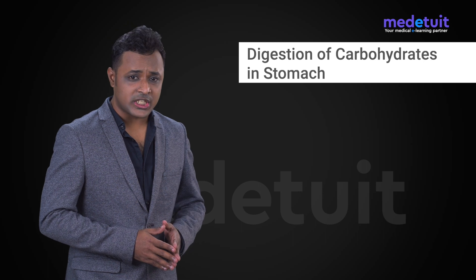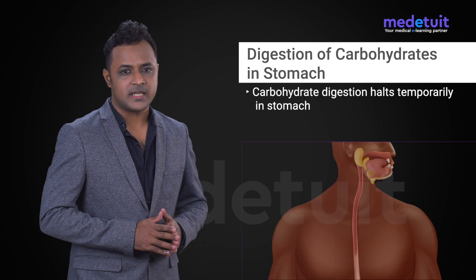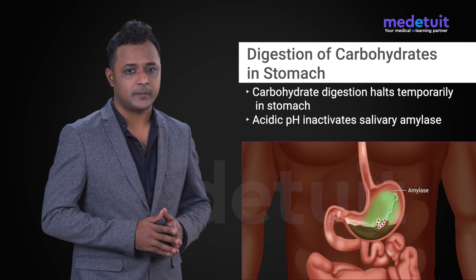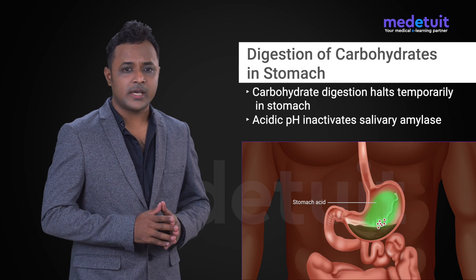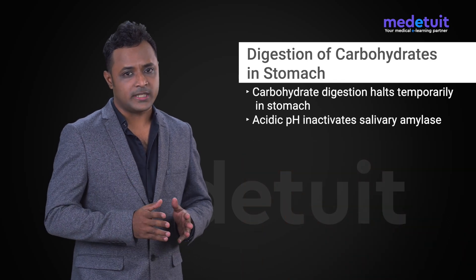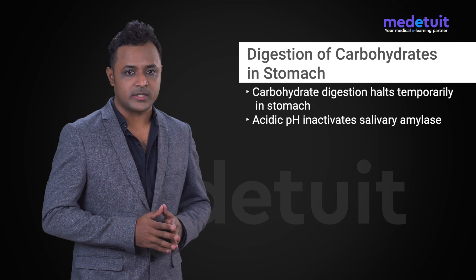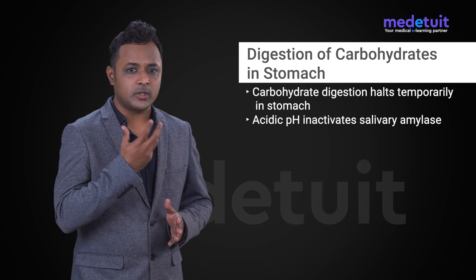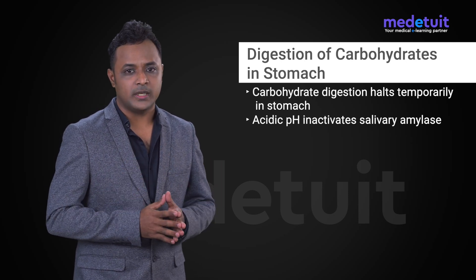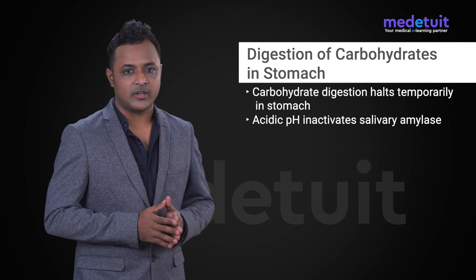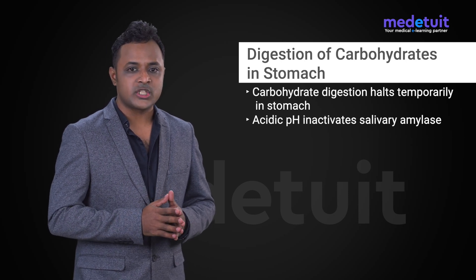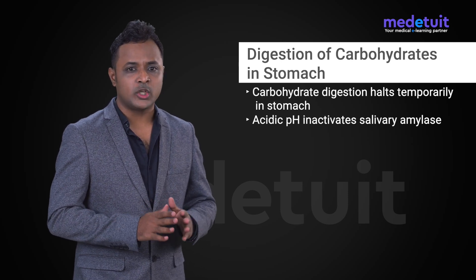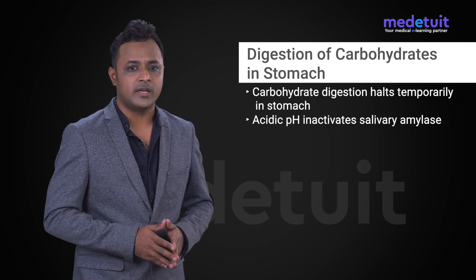The process of digestion of carbohydrates temporarily halts in the stomach due to the acidic environment present there. Salivary alpha-amylase requires a neutral pH and the availability of chloride ions for its action — both of which are available in the mouth. When food contents reach the stomach, the acidic environment inactivates the salivary alpha-amylase, so there is no further digestion of carbohydrates in the stomach.